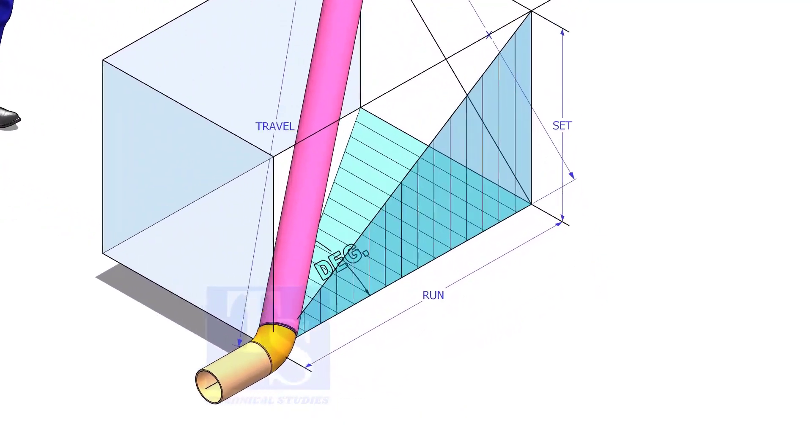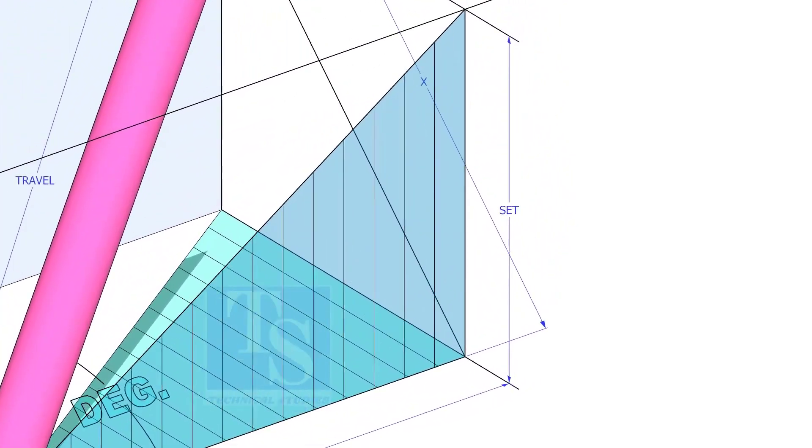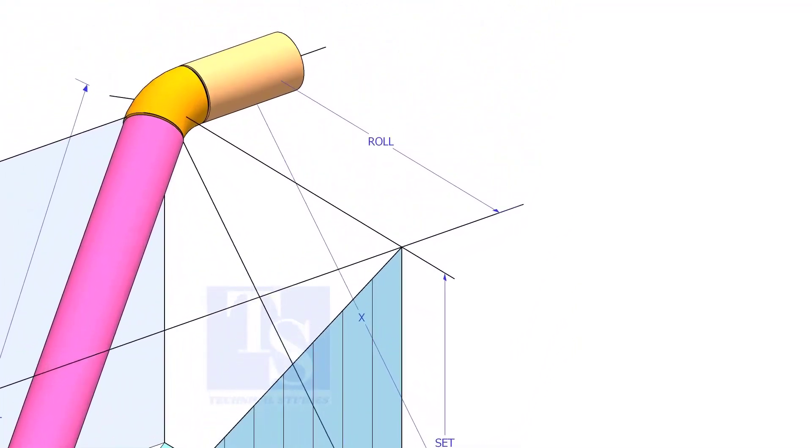In this video, I will show you how to calculate the travel length and the including angle of a double rolled offset pipe.